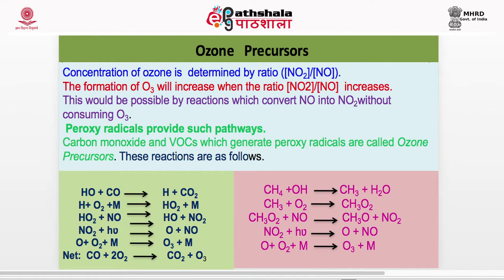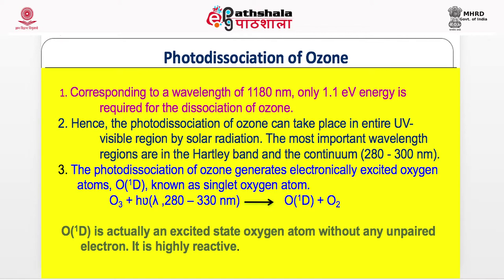Once ozone has been formed, it also dissociates and it needs only a small energy — only 1.1 electron-volt energy, corresponding to 1180 nanometre wavelength. The photodissociation of ozone can take place across the entire UV-visible region by solar radiation because of this low energy requirement. The photodissociation of ozone generates a very important electronically excited atom O(1D), known as singlet oxygen. This is the excited-state oxygen atom, in contrast to O(3P) which is the ground-state oxygen atom. O(1D) has all electrons paired, whereas in O(3P) two electrons are unpaired.